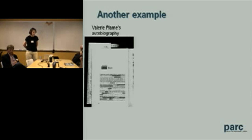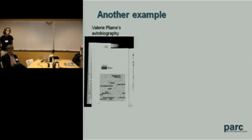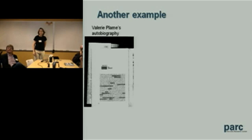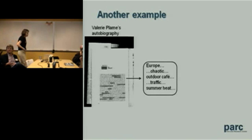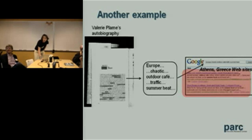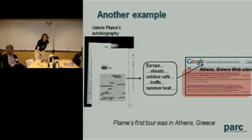Valerie Plame was the covert CIA agent whose identity was leaked during the Bush administration. She wrote a book, and the CIA redacted chunks of it. This is the chapter where she's talking about her first tour of duty with the CIA. You can't immediately tell where that tour was because they've redacted it. But there's a lot that hasn't been redacted — she talks about it being in Europe, complains about the heat and traffic. Athens, Greece is the top two hits, and that is where her first tour of duty was. So an inference could be made based on the remaining content.